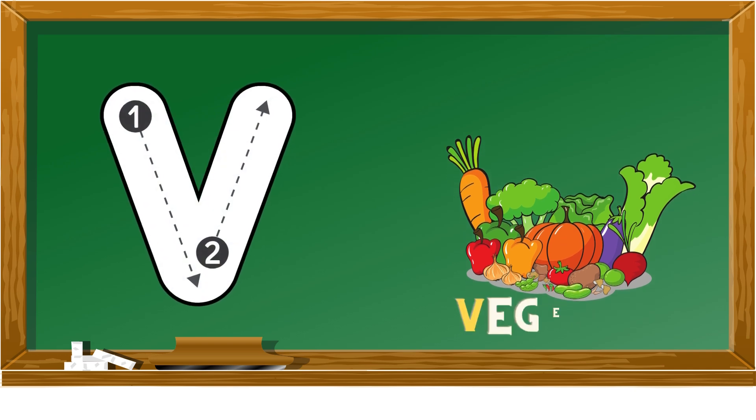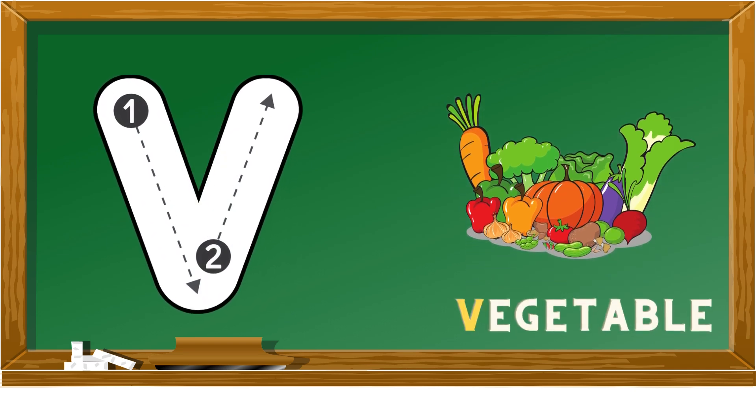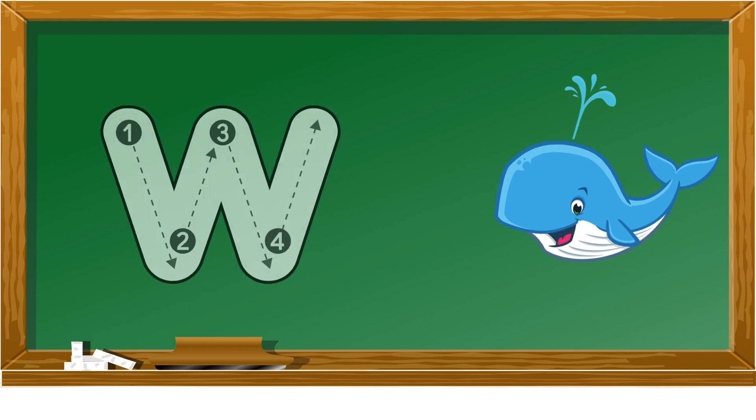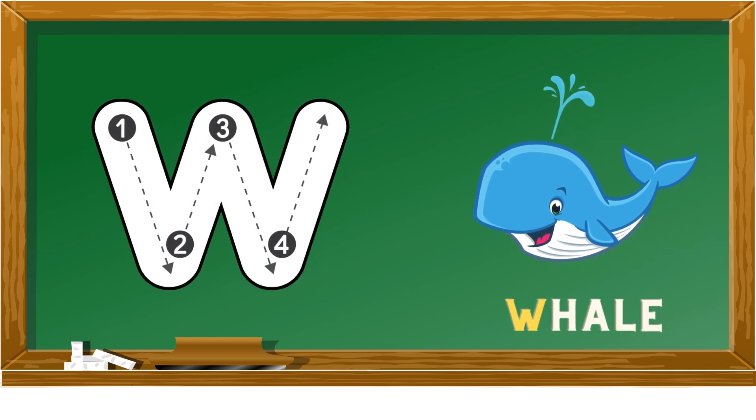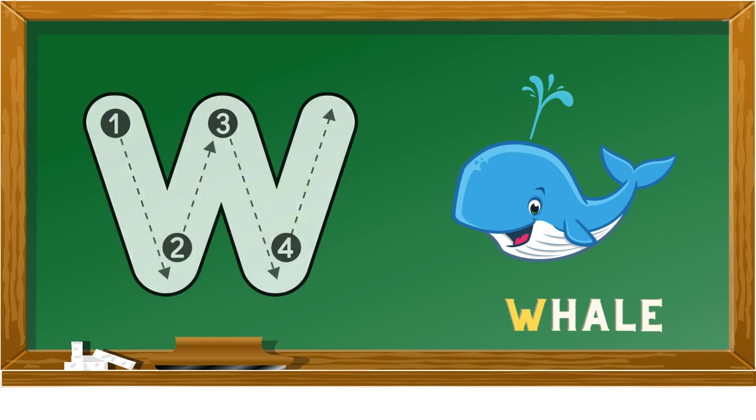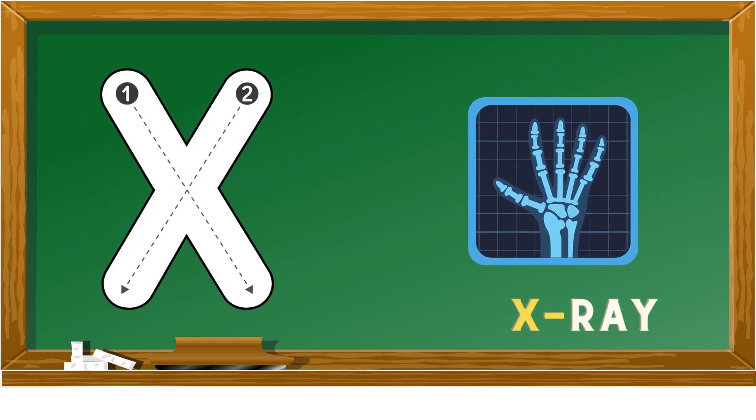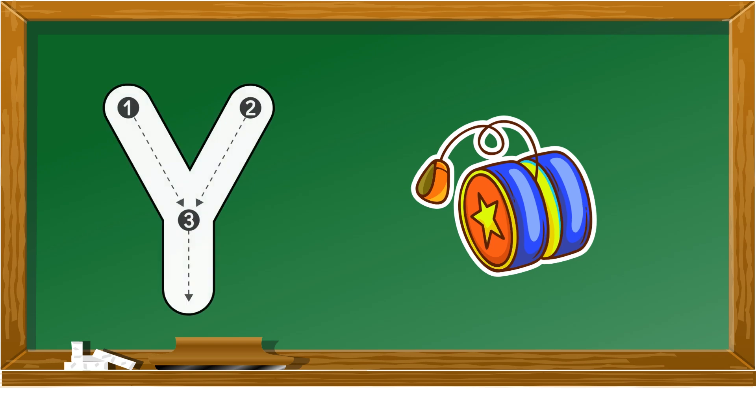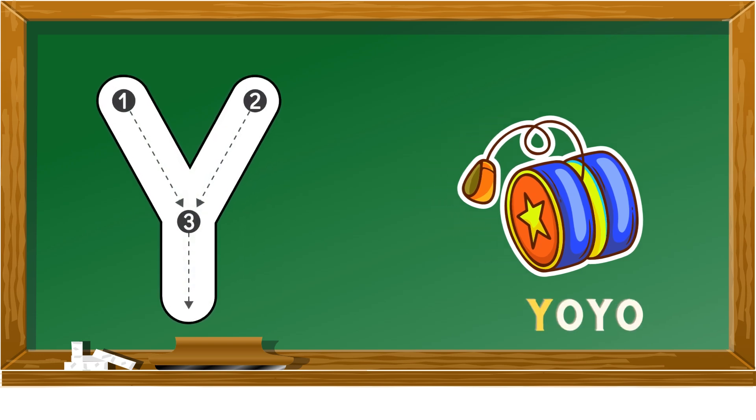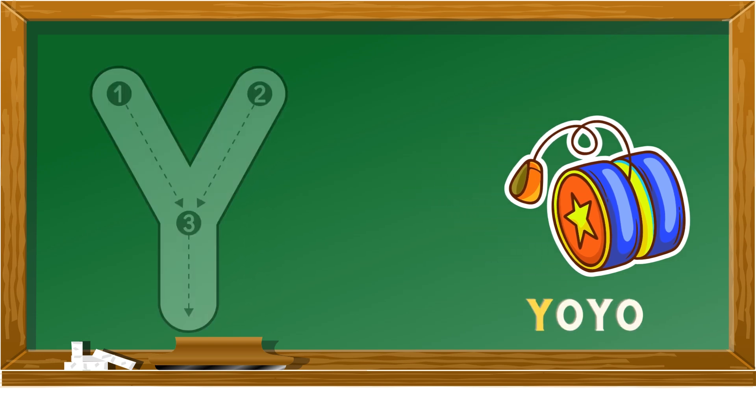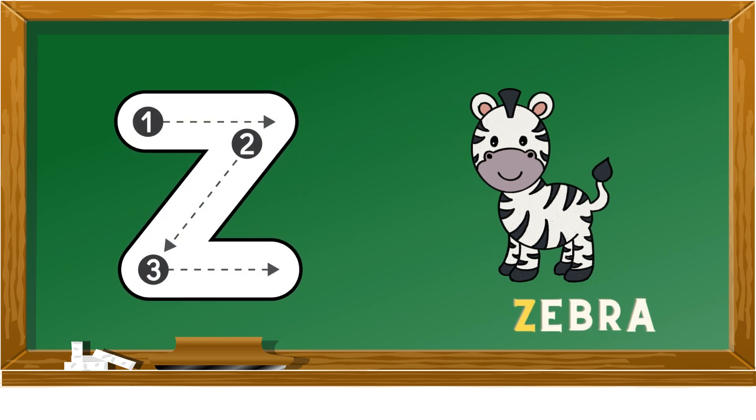V is for vegetable, W is for whale, X is for x-ray, Y is for yo-yo, Z is for zebra.